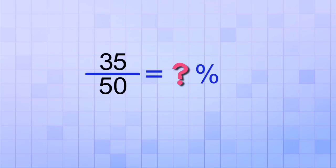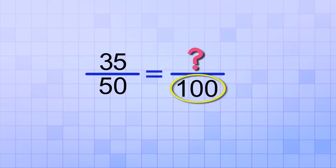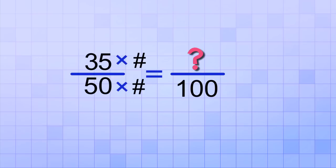To find the percent, all we need to do is convert the fraction into its percent form. That means we need to convert it into an equivalent fraction that has 100 as the bottom number. Well, one way we could do that would be to look for a number that we could multiply both the top and bottom numbers by that would change the bottom number into 100.